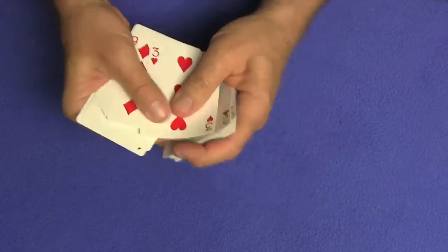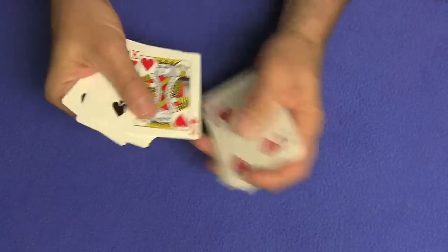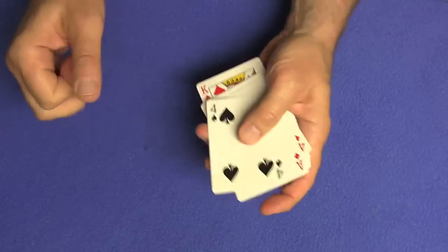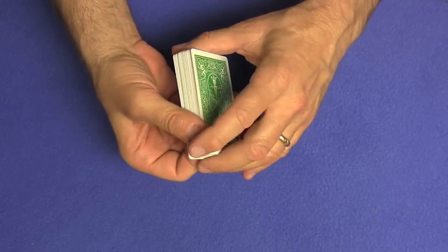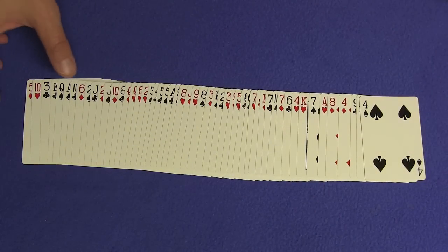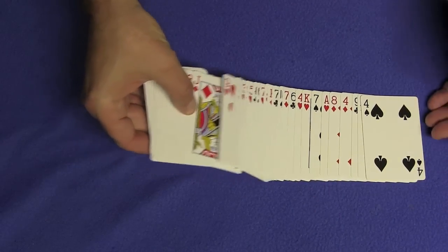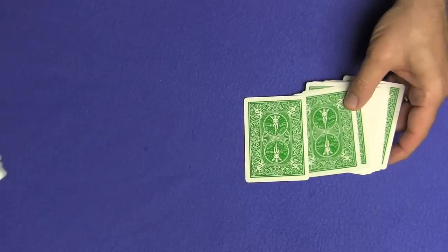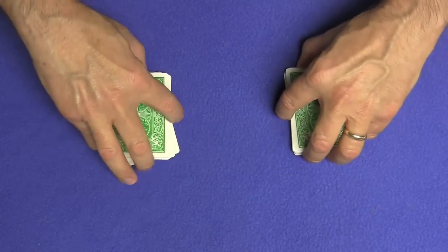Continuing to count to 52, and I'm remembering the jack of diamonds. Now you can spread the cards out, and I'm looking for the jack of diamonds. And that's the 26 cards right there. Flip these cards over, and now we have two piles of 26 cards.